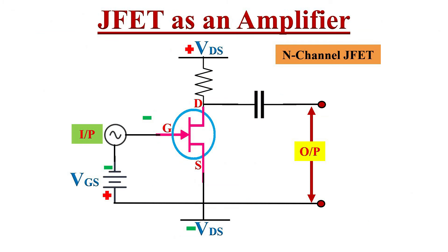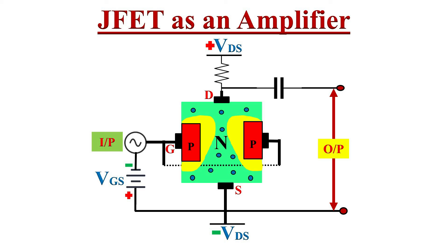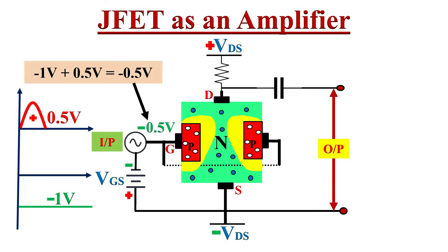Now let's see how JFET can be used as an amplifier. This figure shows a JFET amplifier circuit. The weak input signal is applied between gate and source, and amplified output is obtained in the drain-source circuit. For proper operation of JFET, the gate must be negative with respect to source — that is, the input circuit should always be reverse biased. This is an N-channel JFET, so majority charge carriers are electrons in the N-channel and holes in the gate region. Suppose the reverse voltage at the gate-source junction VGS is minus 1 volt.